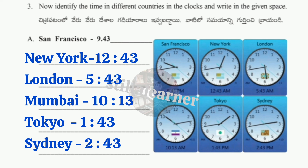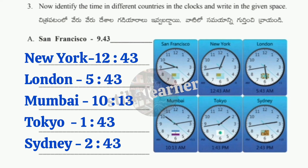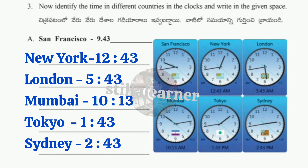Question three: Identify the times in different countries shown on the clocks. Six clock figures are given, each showing a different time. San Francisco: 9:43. New York: 12:43. London: 5:43. Mumbai: 10:13.